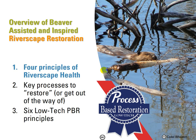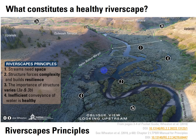Now, with the four principles of riverscape health — dumbing down a lot of science to answer one simple question — before we try and improve a riverscape, we better understand what constitutes a healthy one. These span all riverscapes. Streams need space. Structure, like a beaver dam, forces complexity, and that builds resilience to disturbance. The importance of these things depends — our favorite two words in the natural sciences. And inefficiency — the inefficient conveyance of mass and water through the system — is a hallmark of health.